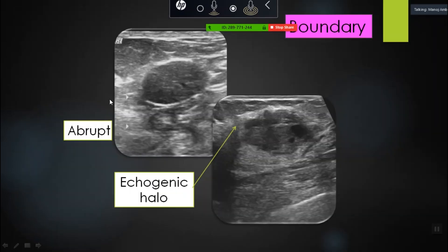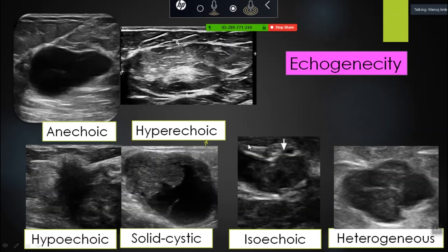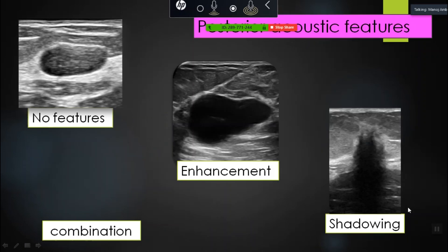Boundary: this is an abrupt boundary. Here we have an echogenic halo around the lesion — this is usually quite a strong telltale sign of a malignant feature. Echo pattern: anechoic is what we see in cysts; hyperechoic is fat — here is a lipoma which is capsulated; hypoechoic lesions include malignant masses and all darker lesions; solid-cystic; isoechoic; and heterogeneous where you have echogenic septae within and variable echogenicity.